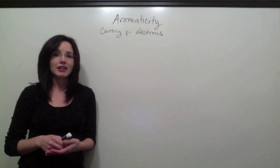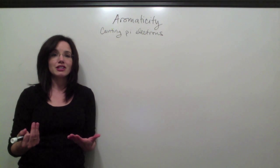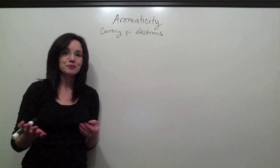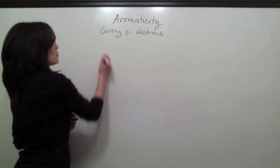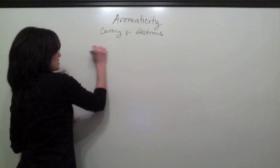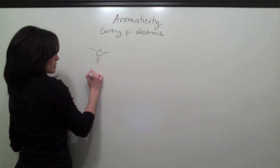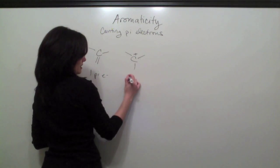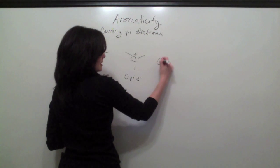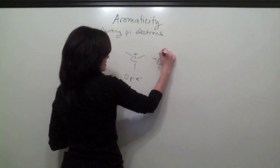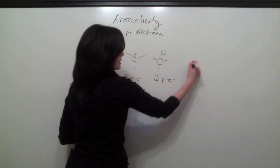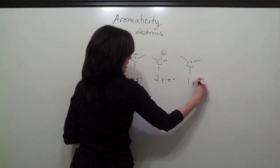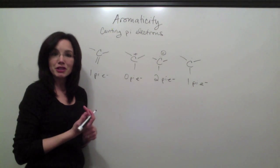In order to count the number of pi electrons in the compound, we just need to know how many electrons each atom in the compound is worth. We can start with the carbons. A regular sp2 hybridized carbon that's touching a double bond is worth one pi electron. A carbocation is worth zero pi electrons. A carbanion is worth two pi electrons. And a carbon radical is worth one pi electron.